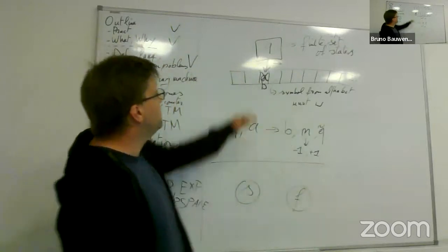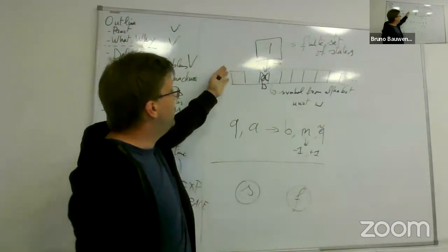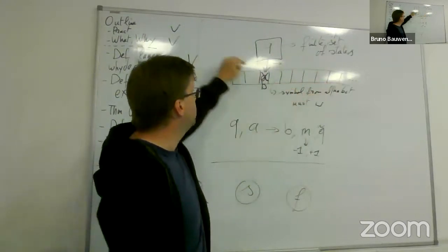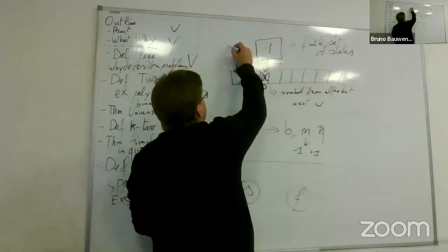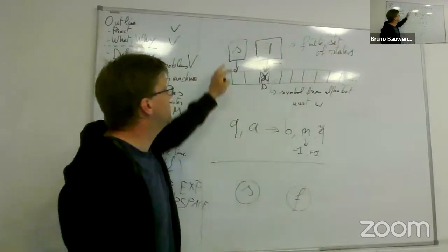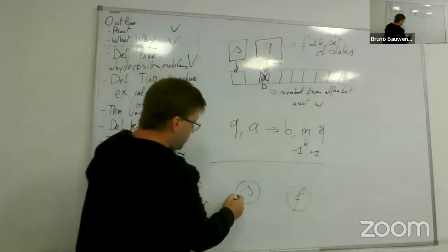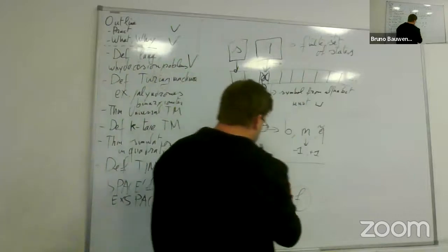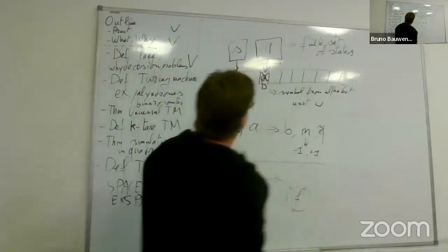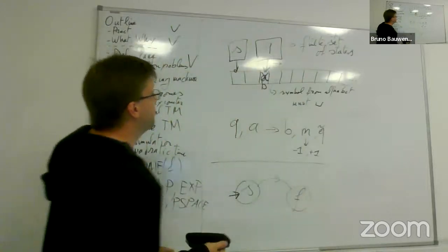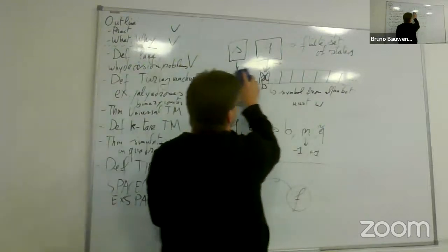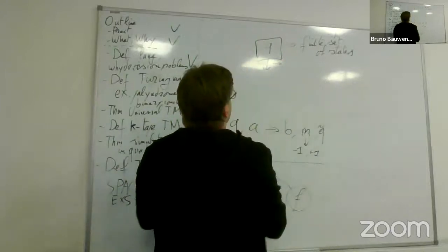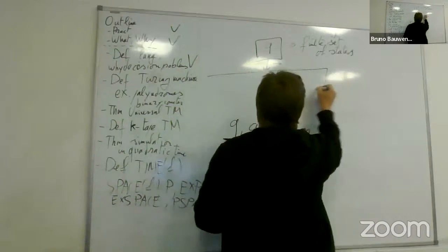There is a nice thing called the state diagram of the Turing machine. Let me draw a Turing machine. It has two states. Initially the machine is located on the first cell of the tape and is in a special state called the start state.